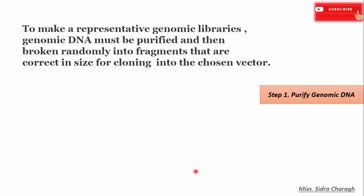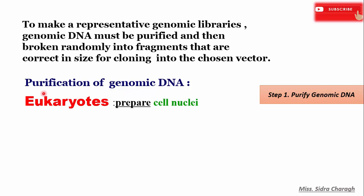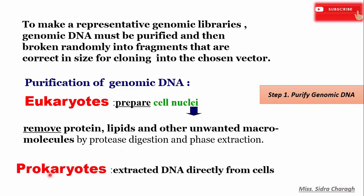In the first step, we purify our genomic DNA. To make a representative genomic library, genomic DNA must be purified and then broken randomly into fragments of the correct size for cloning into the chosen vector. From eukaryotes, we prepare cell nuclei and from the nuclei isolate genomic DNA, removing proteins, lipids, and other unwanted macromolecules by either protease digestion or phase extraction. In prokaryotes, we can directly extract DNA from the cells.